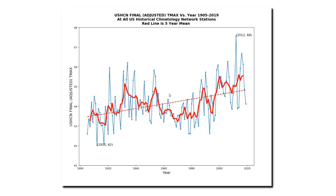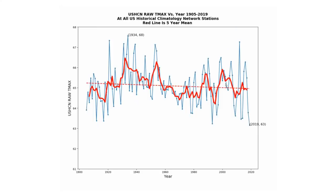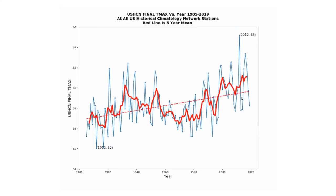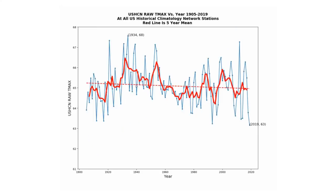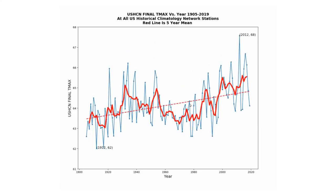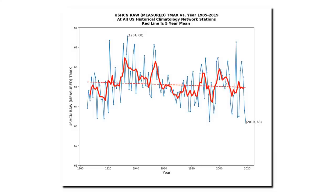Now I'm going to show you an animation to show how the adjustments dramatically turn cooling into warming: raw dataset, TOB, final. The measured data shows a significant cooling trend, but the final adjusted data shows a strong warming trend, and this is the graph which gets released to the public.